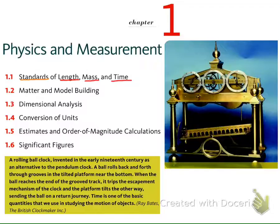Also, in some phenomena we cannot observe or measure directly, so usually in physics we have to create a model — what we may call model building. We create the model as something like our imagination of how nature works. Then we do the calculation and compare it with the experiment. If the model agrees with the experiment, we say the model is likely to be correct; if not, we have to improve the model and compare again.